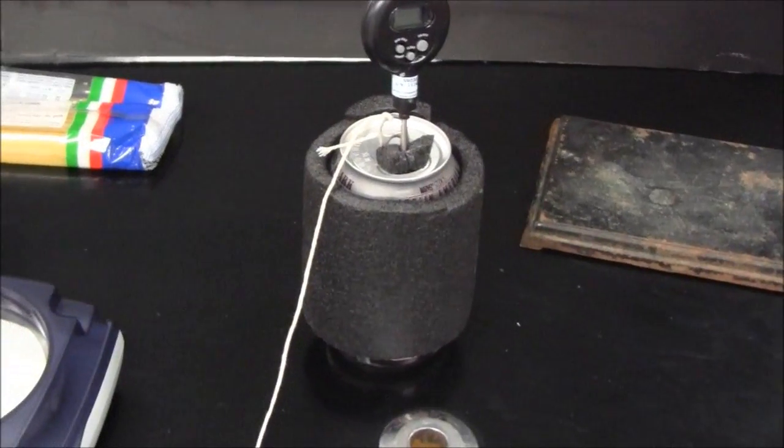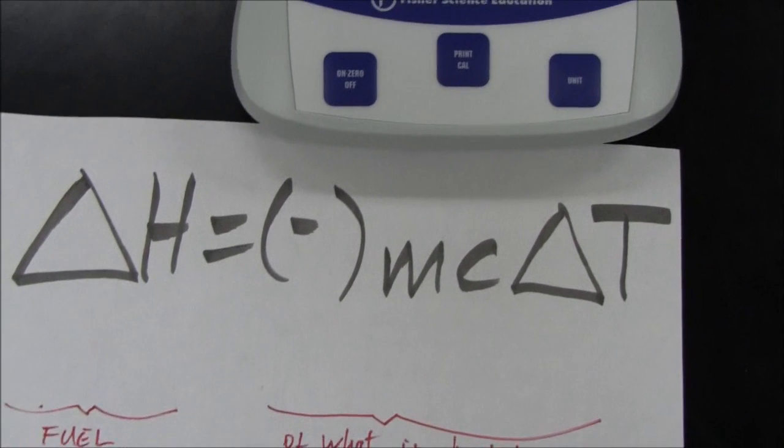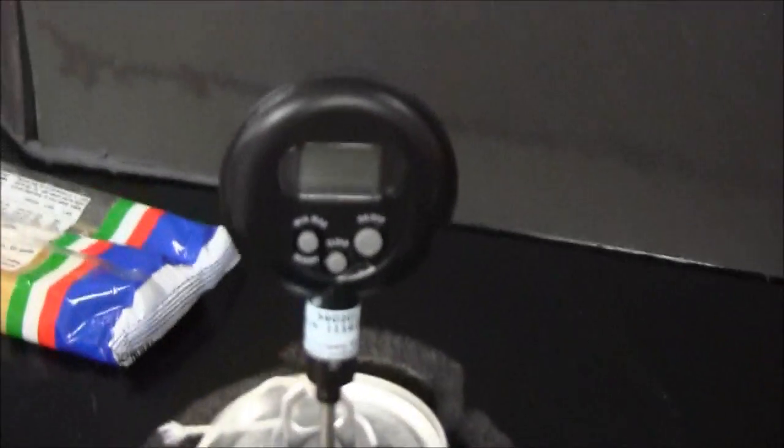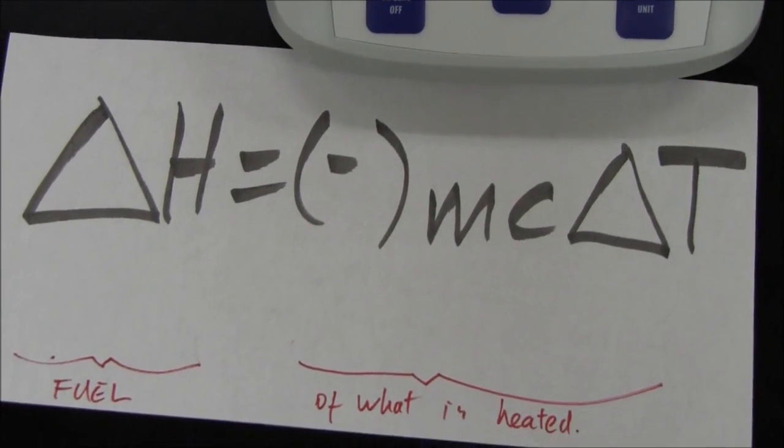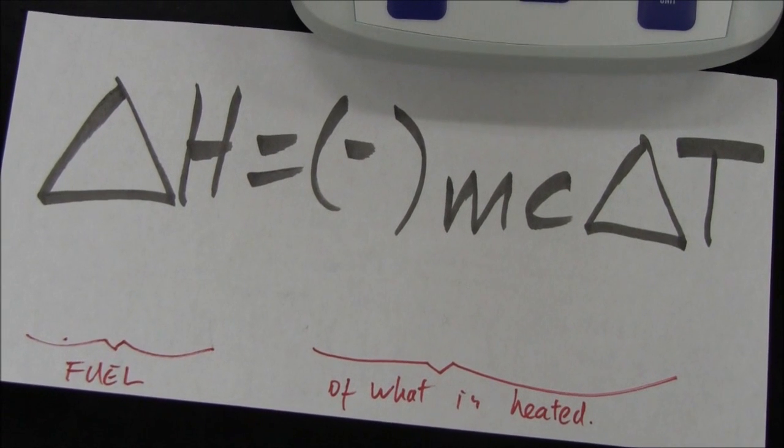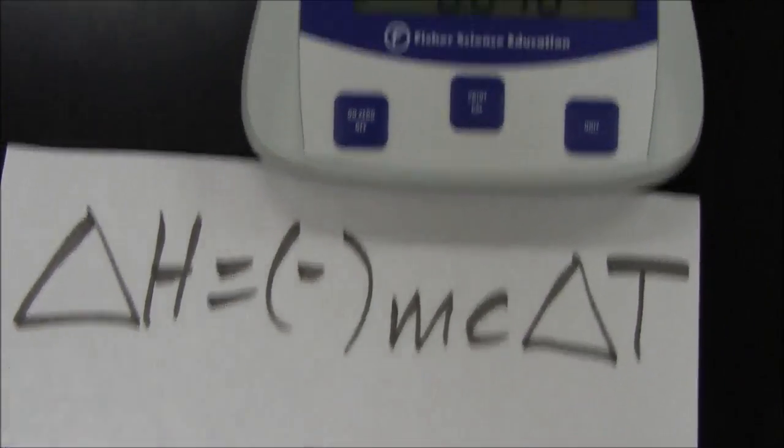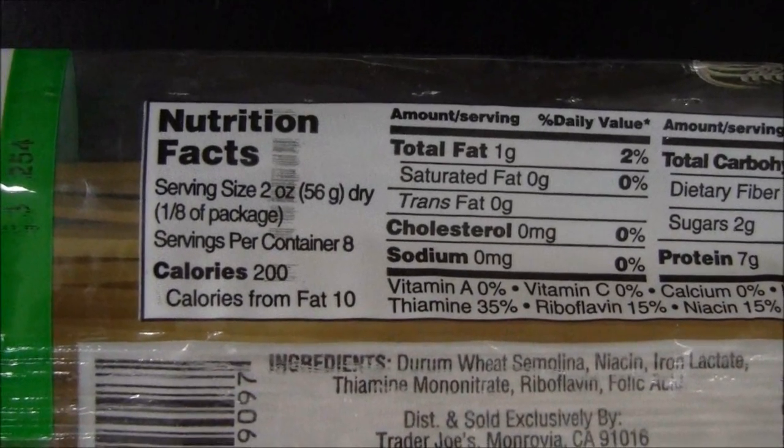So what I intend to do is burn some of the pasta underneath an aluminum can that's been insulated, and there's water in the aluminum can. Now as the pasta burns it transfers its energy to the water, and if I have a known amount of water, which will be m, and I know the specific heat capacity of water, which is in the data booklet, and I know the temperature change of the water, which I'll get from this thermometer, then I can work out delta H, which is the amount of energy that has been transferred to the water. And assuming a 100% transfer of energy from the burning pasta to the water, we can work out our experimental value and compare it to the theoretical value, once we've converted calories to kilojoules.